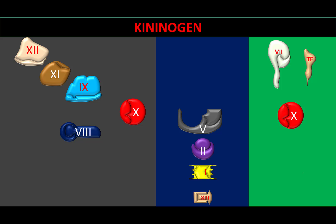Now, the high molecular weight kininogen or low molecular weight kininogen will have an effect on Factor 12 and Factor 11, activating them. So it will be a chain of reactions — Factor 12 leads to activation of the high molecular weight kininogen, which in turn activates Factor 12 again.